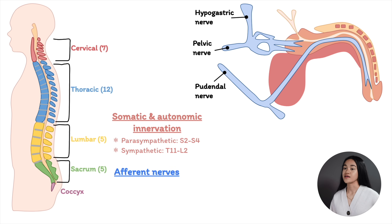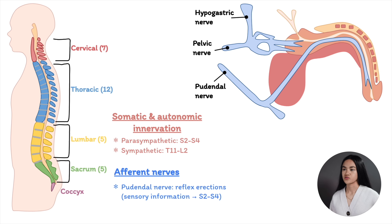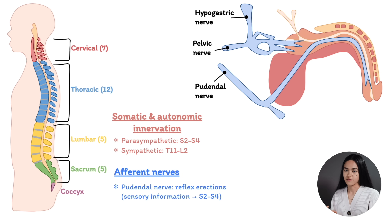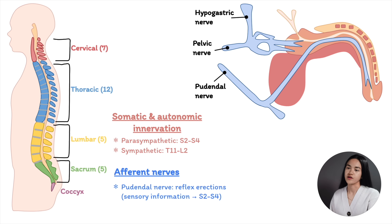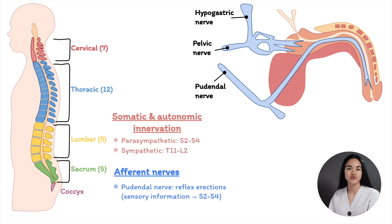The pudendal nerve is responsible for reflex erections. It conducts sensory information from the genital and scrotal skin to the sacral cord, S2 to S4. The scrotum also has lumbar sensory innervations at L1 and L2. The penile skin and glans have many free nerve endings responsible for receiving touch signals, pain, and temperature. Erection is also caused by central afferent stimulation — touch, audio, visual, smell, psychogenic, fantasy, and other stimuli.